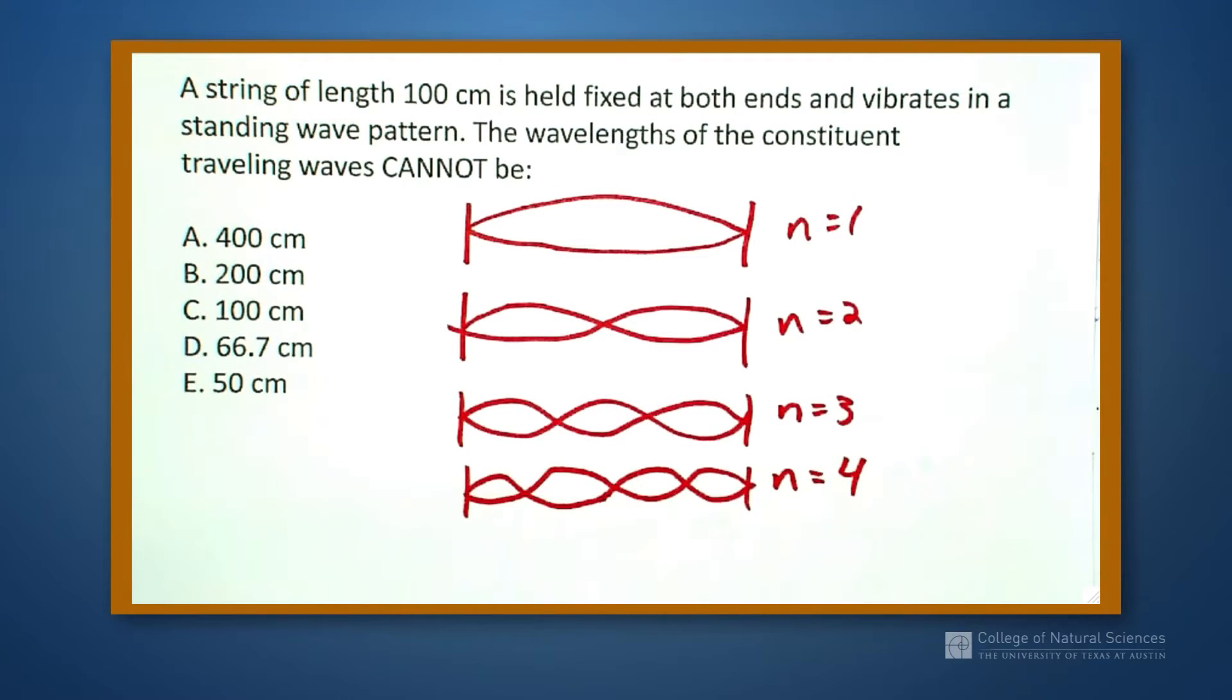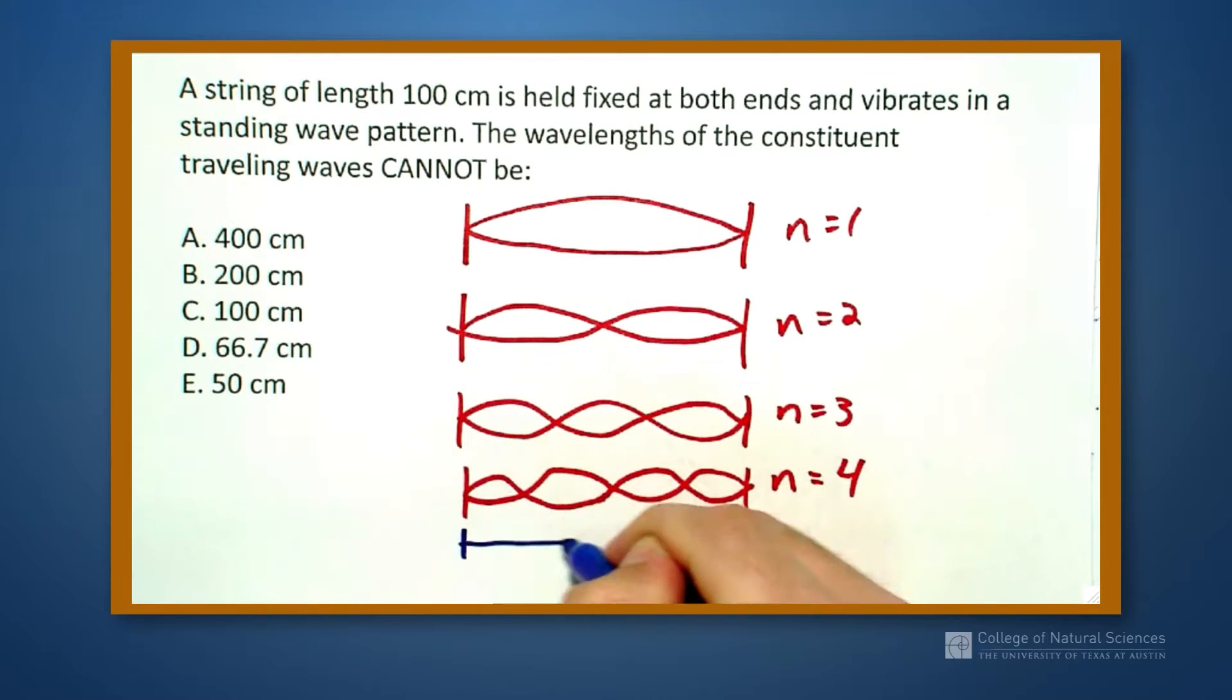Alright, so we have these and we know that this length right here, L, is equal to 100 centimeters. So we want to know what are the wavelengths that we can have and the ones that we can't have.